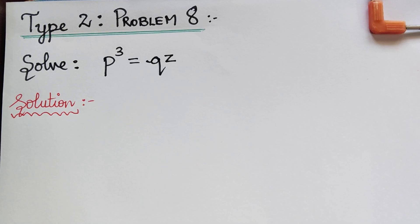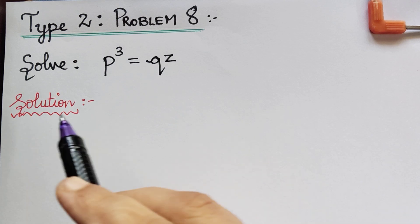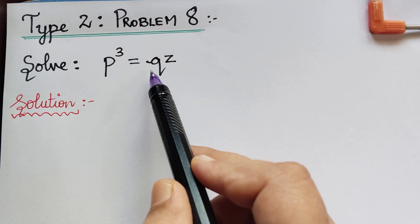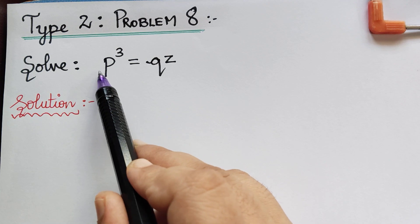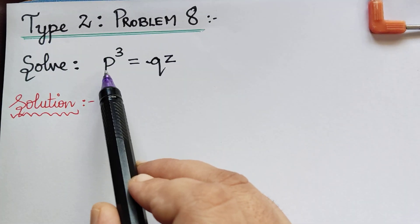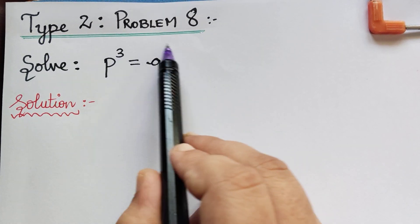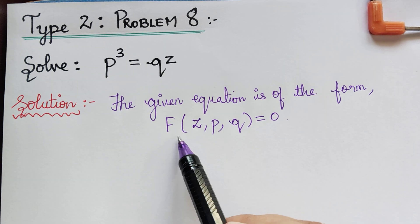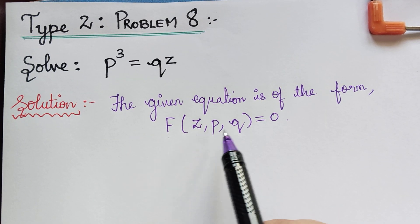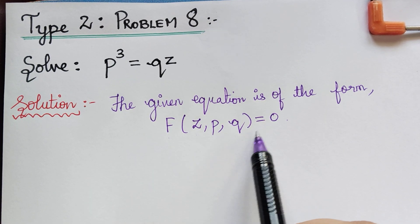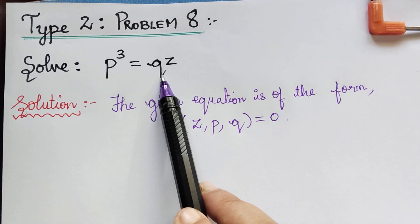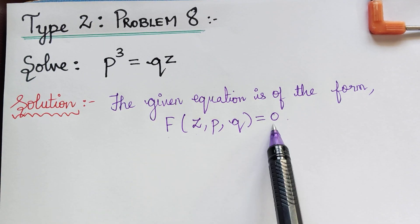Dear students, here we have problem 8 under the topic non-linear partial differential equations of type 2. The question is: solve p³ = qz. The given question has only p, q, and z. So the given equation is of the form F(z, p, q) = 0, where only p, q, and z are present explicitly.